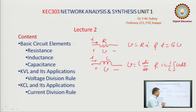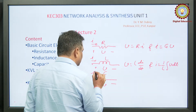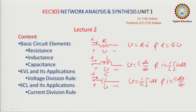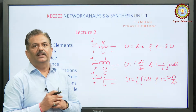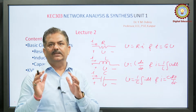The next element is capacitance. V is the terminal voltage, I is the terminal current. Voltage and current are related by V equals (1/C) times the integral of I dt, and I equals C dV/dt. Capacitance is an energy storing element — it stores electrical energy, and the electrical energy stored is given by (1/2)CV². This is the brief review of what we discussed in the last lecture.